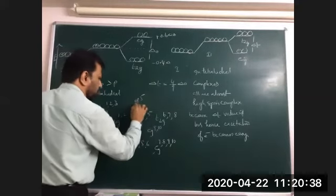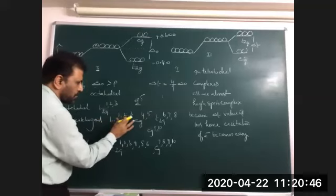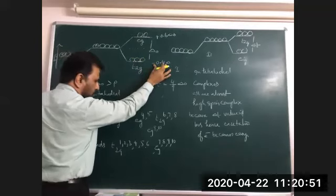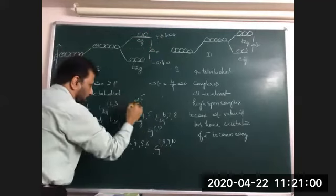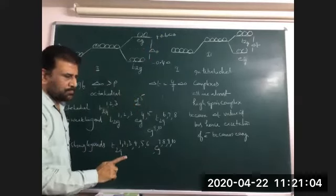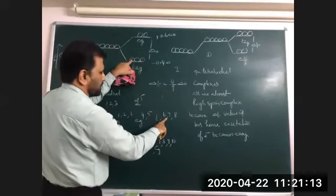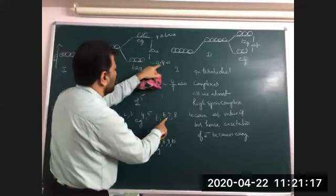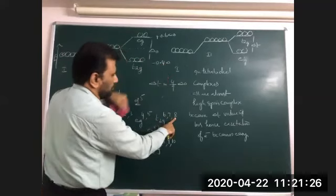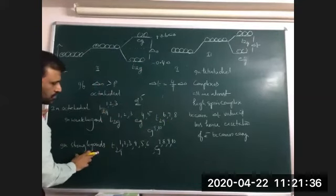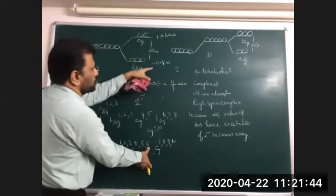For a d5 configuration in weak ligand, Crystal Field Stabilization Energy: three electrons in t2g give 3 × (−0.4) = −1.2; two electrons in eg give 2 × (+0.6) = +1.2. Therefore CFSE = −1.2 + 1.2 = 0. For a d7 system it will be −0.8 delta o, for a d8 system it will be −1.2 delta o. For a d6 system in strong ligand: 6 × (−0.4) = −2.4 delta o. In weak ligands it is just −0.4 delta o; in strong ligands it is −2.4 delta o.